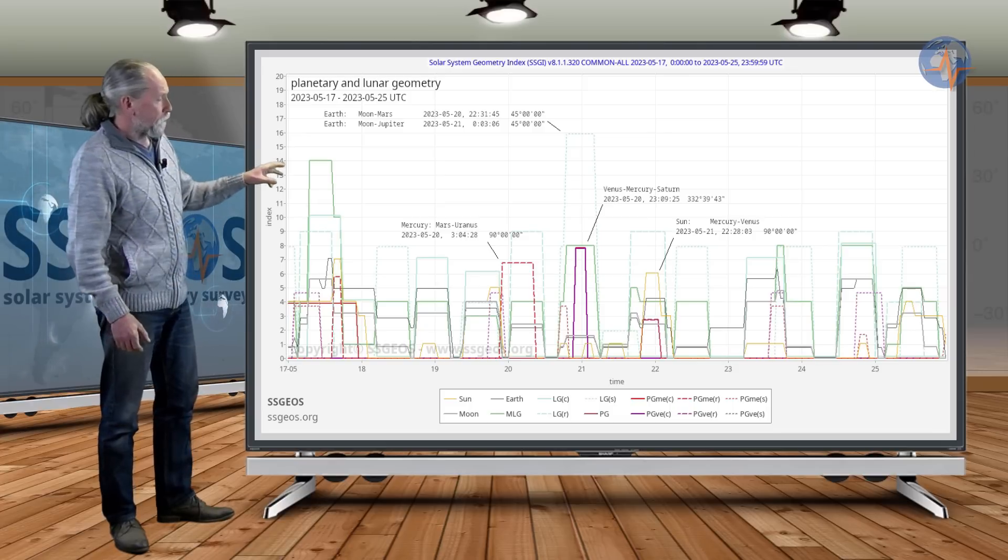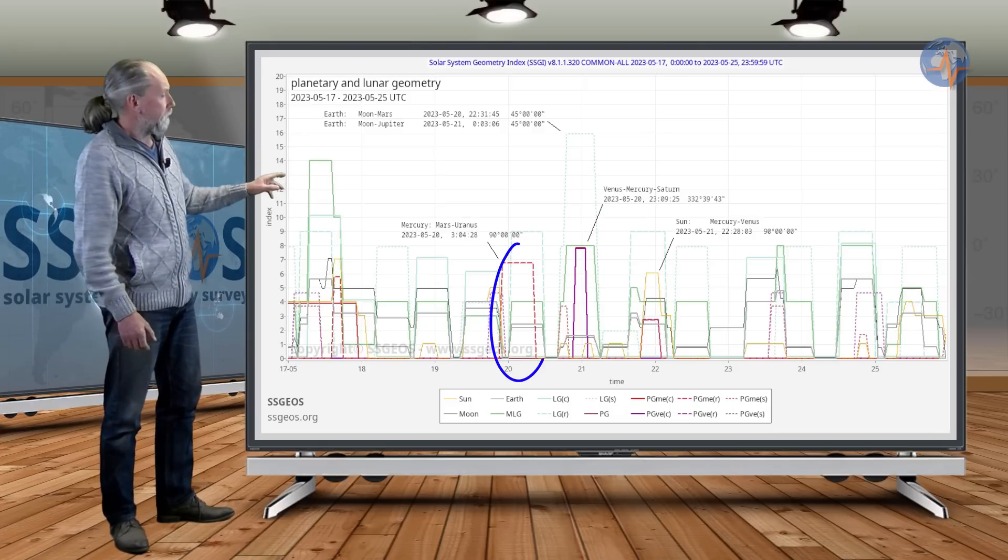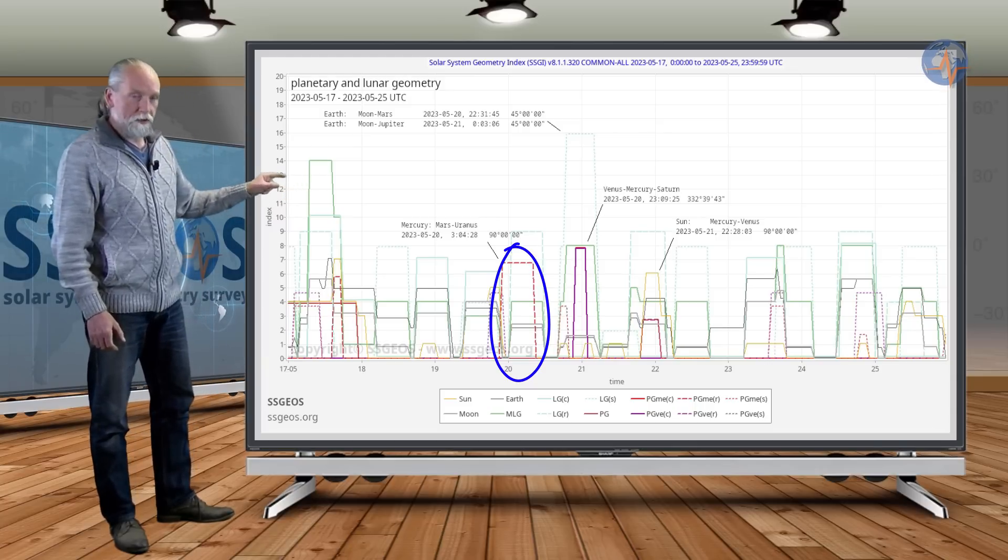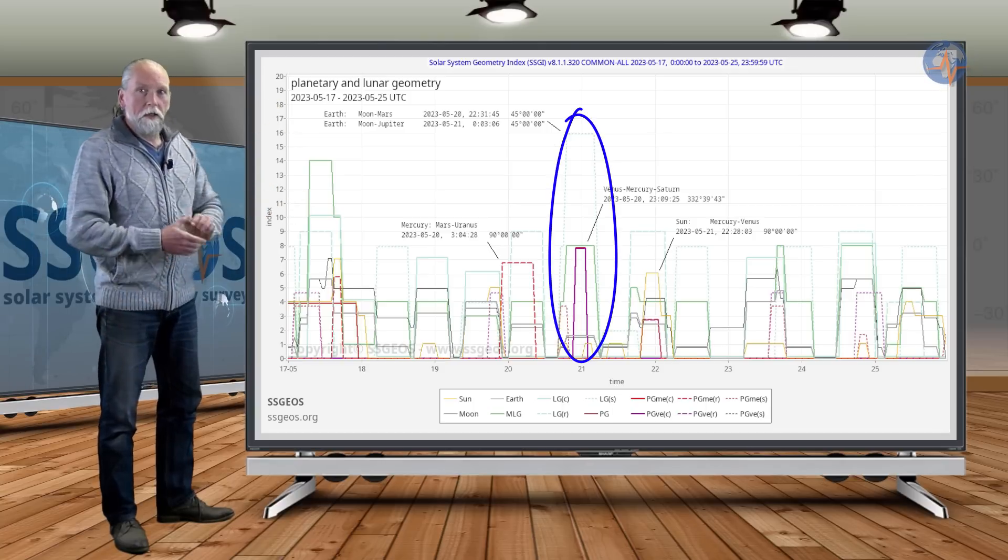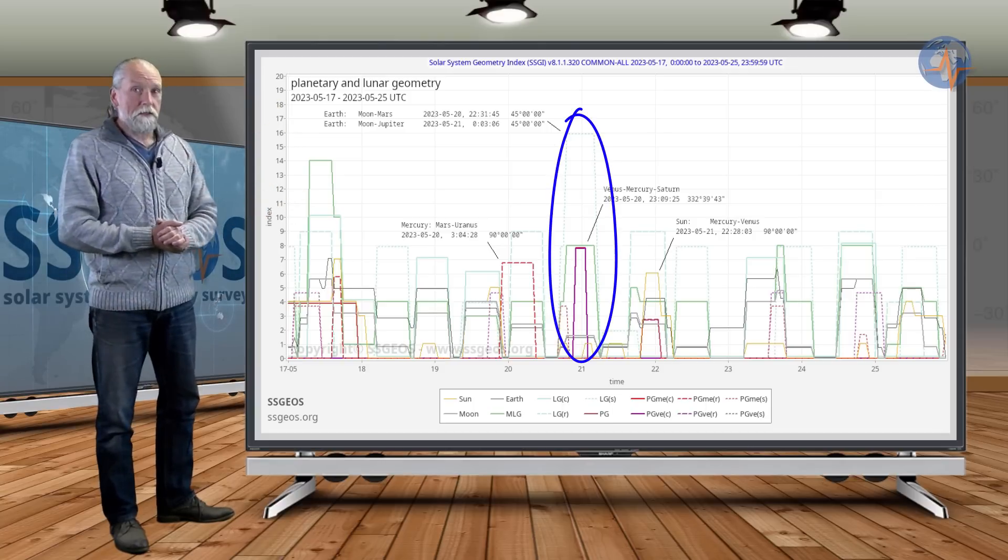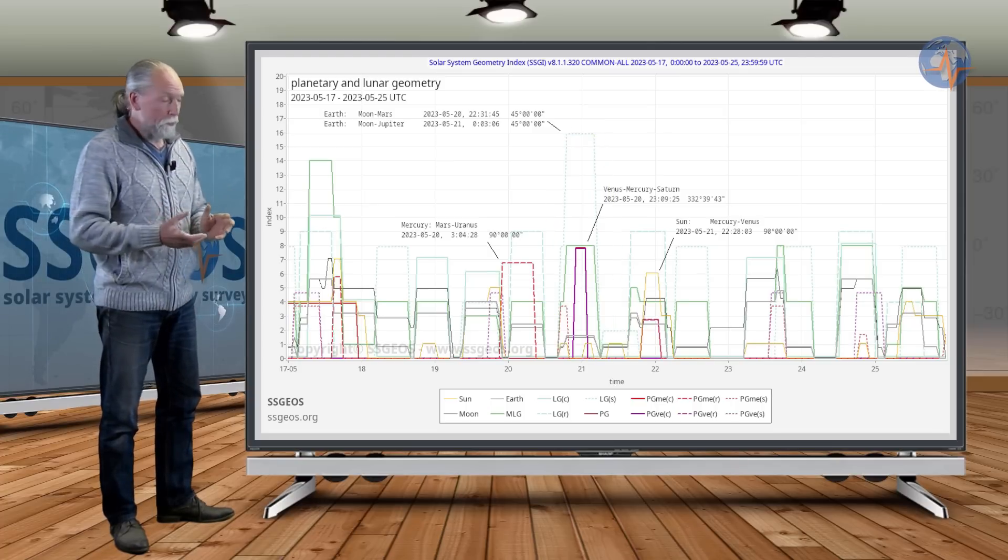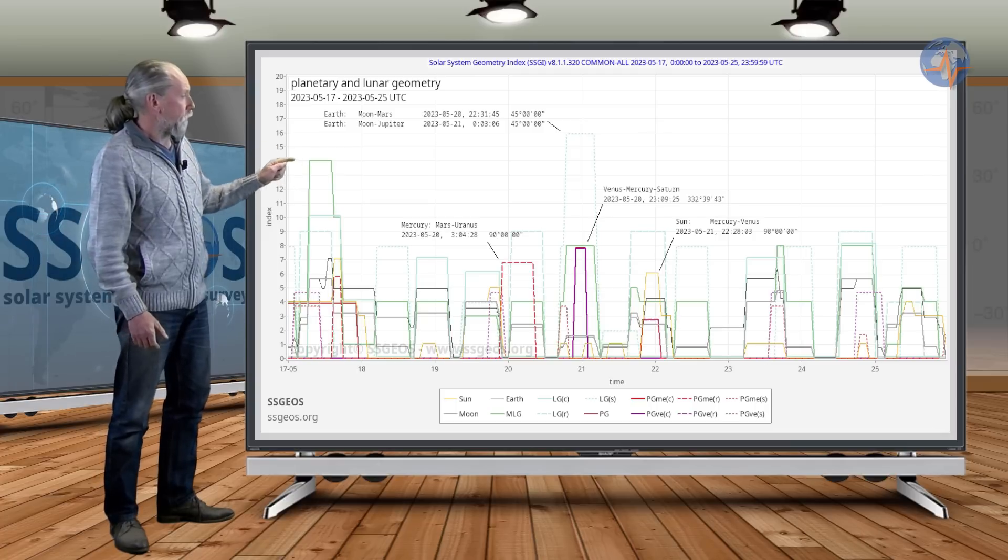If we look at that planetary geometry, it starts early on the 20th with Mercury, Mars, and Uranus in a right angle—that is 90 degrees. That will be followed by a high lunar peak. Dotted lines means semi-right angles. A high peak means multiple semi-right angles, and indeed with the Moon and Mars and also the Moon and Jupiter...